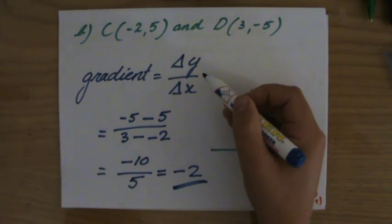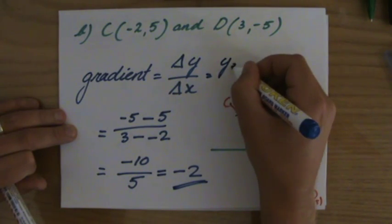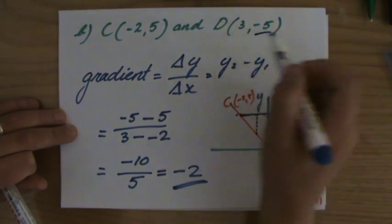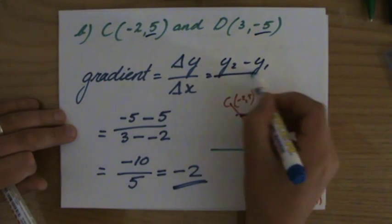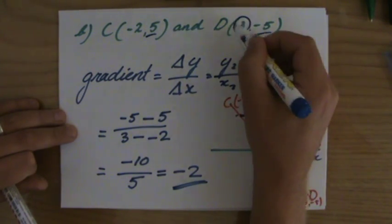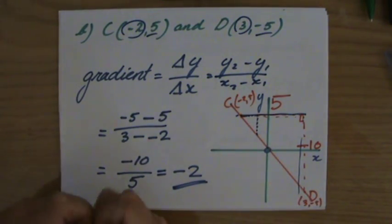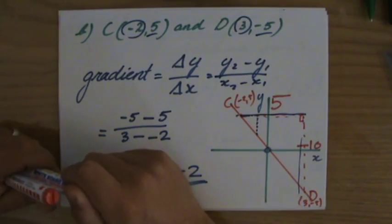Okay, so the gradient is minus two. The difference in the y direction divided by the difference in the x direction. If you like: y2 minus y1 divided by x2 minus x1. It's your turn now. I know you can do it. All the best.